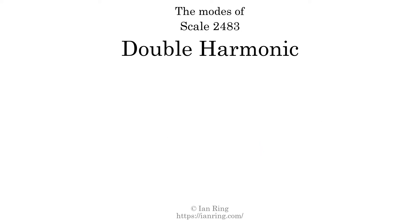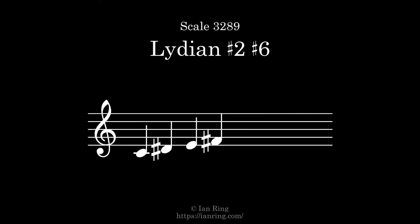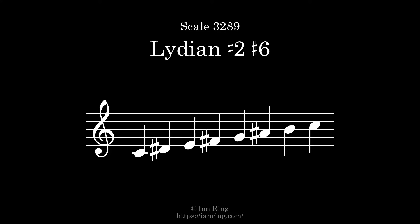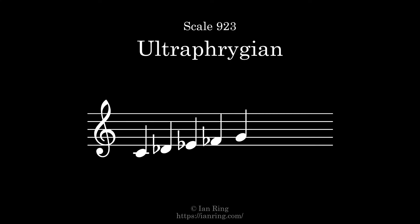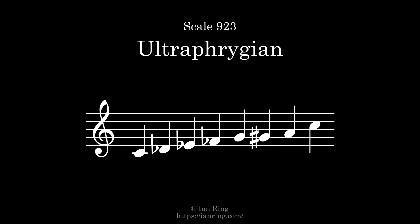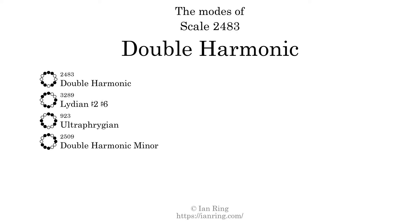This scale has 7 modes. The first mode is itself. The second mode is scale 3289, also known as double harmonic minor. The third mode is scale 2509, also known as double harmonic minor. The fourth mode is scale 2509, also known as double harmonic minor.